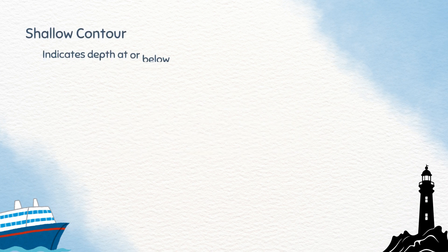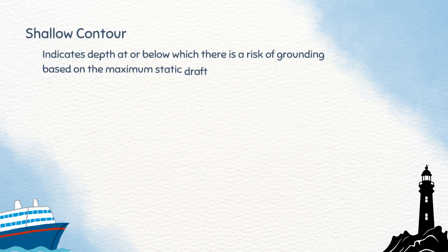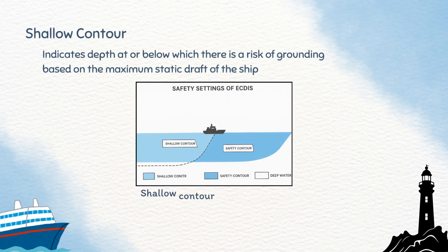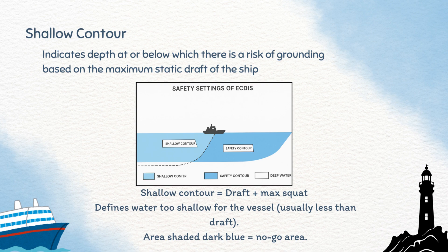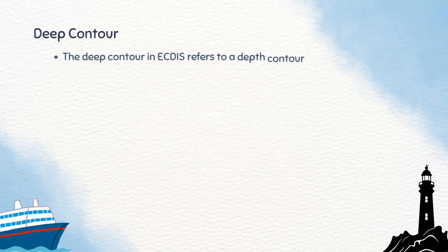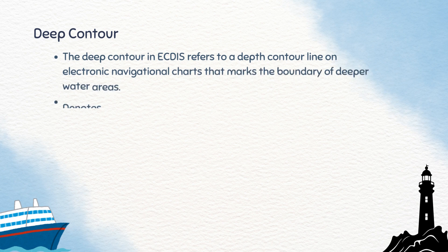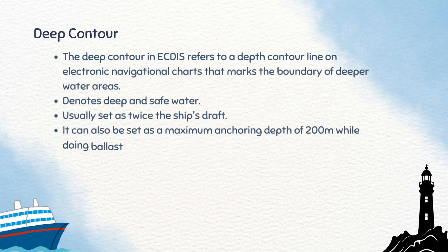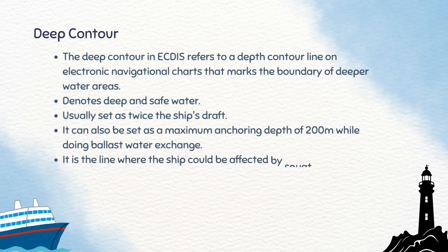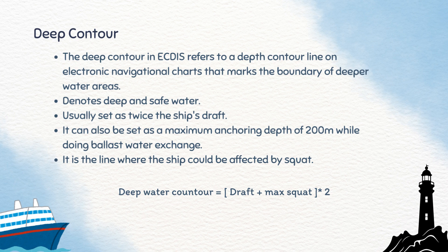The shallow contour indicates depths at or below which grounding is possible. It is normally set to draft plus maximum squat. On the chart, the area shaded dark blue is considered a no-go area. The deep contour marks the boundary of deeper and safer waters. It is usually set as twice the ship's draft, or sometimes 200 meters for ballast water exchange. It is the line where the ship could be affected by squat. The calculation is: deep water contour equals (draft plus max squat) times two.